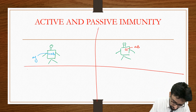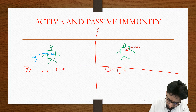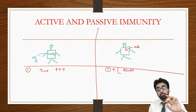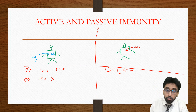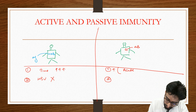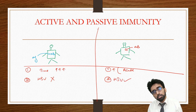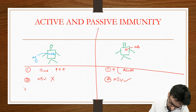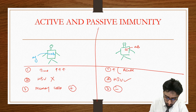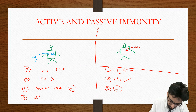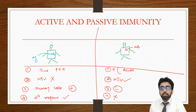In active immunity there is a greater time lag because antibody production takes time. In passive immunity there is less time lag, so you can use it in acute or emergency conditions. Active immunity creates memory cells in our body; passive immunity does not create memory cells. Therefore, secondary response or anamnestic reaction will occur in active immunity but not in passive immunity, because there are no memory cells.